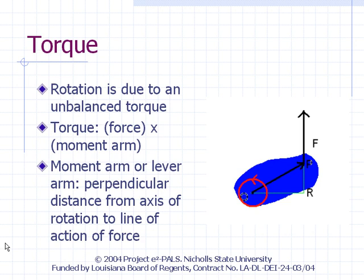A rotating object is said to have an unbalanced torque. Torque is associated with a force acting on the object. Consider the diagram shown here, where force F is acting on the blue object at point P. If the object is rotating counterclockwise around point O, we can calculate the torque due to force F. Torque is equal to the force times the moment arm of the force. The axis of rotation is a line perpendicular to the plane of the screen.